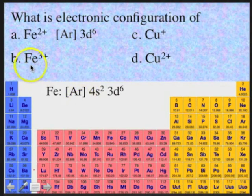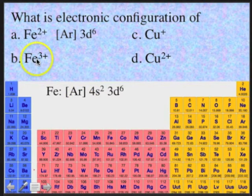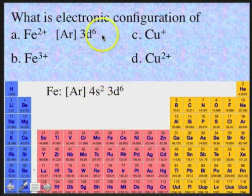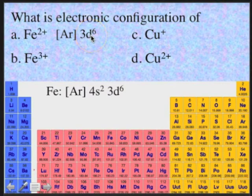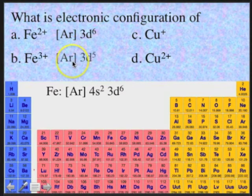For iron 3+, the ferric state — it's already at 3d6, so it has to lose one more electron. The only place it can take it from is the d6, so you will have argon core, 3d5.